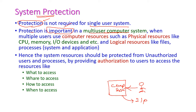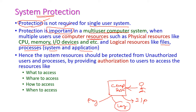In a multi-user computer system, the computer resources should be protected. What type of resources do we have? We have both physical resources and logical resources. Physical resources are nothing but the CPU, memory, and IO devices. Logical resources are the files and processes — that may be system programs and application programs.